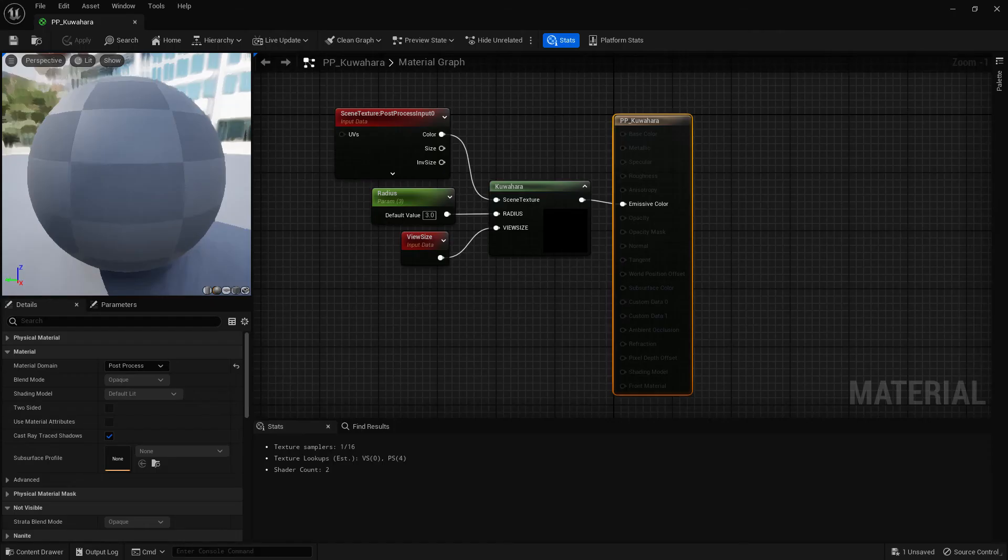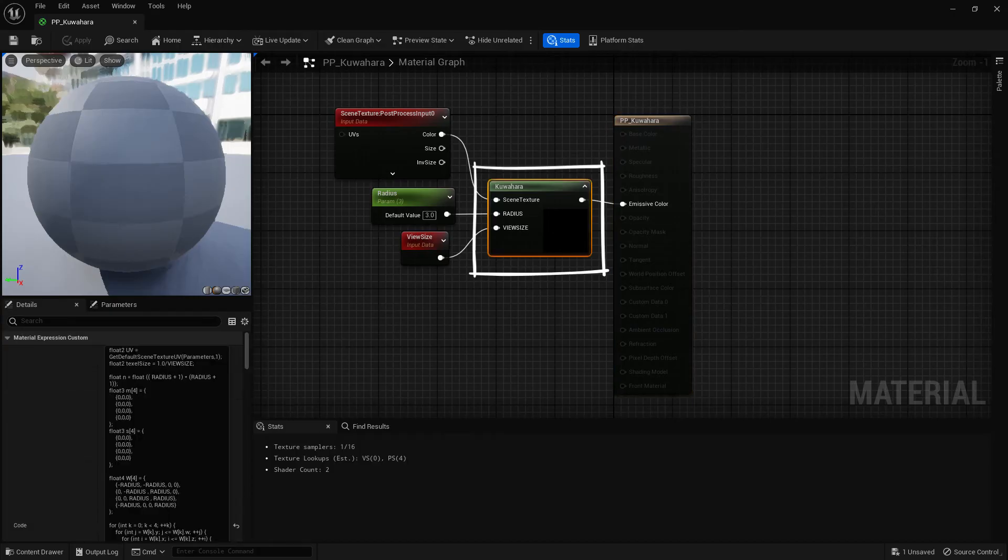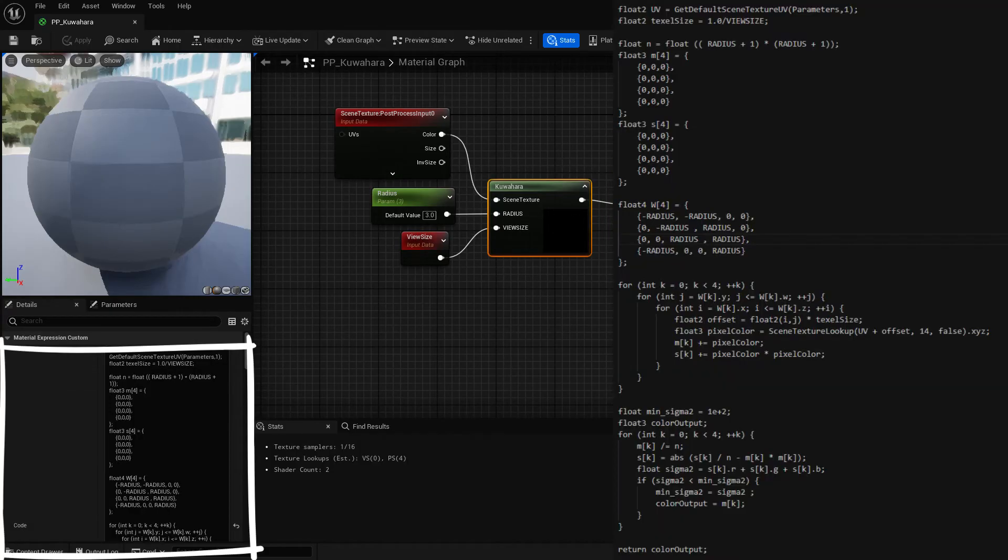To implement this in Unreal Engine, we can create a new material and set its domain to post-process. Inside of it create a custom node and copy the shader implementation into its field. The shader code is displayed on the right side here and is available in this video description.